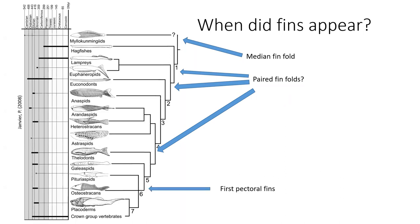What we can see is when the first pectoral fin appeared. They appeared in a group of fishes called the osteostracans, most likely in the Devonian, about 400 million years ago. The first group where we find pelvic fins are the placoderms, which roughly overlap with the osteostracans — so we still have to go back to the Devonian, some 400 million years.